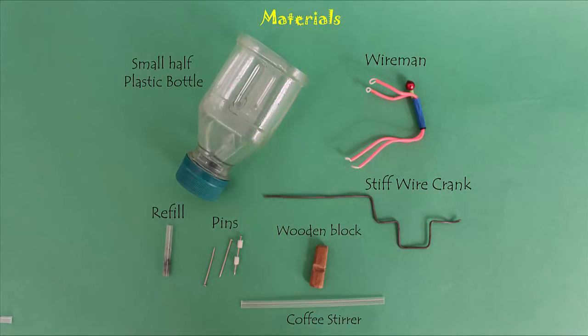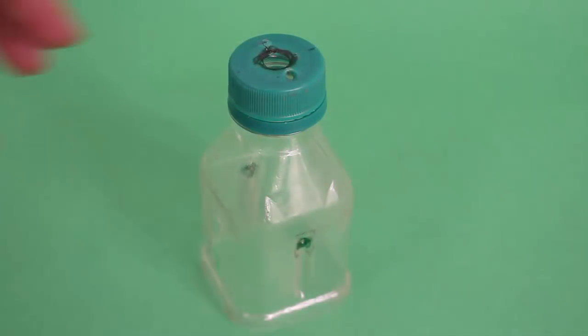To make this dynamic model you will need a plastic bottle, wire for the crank, coffee stirrer refills and pins.